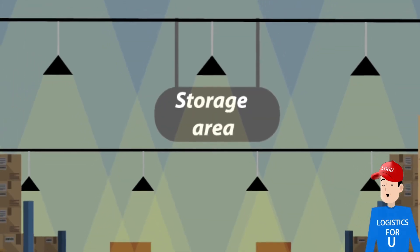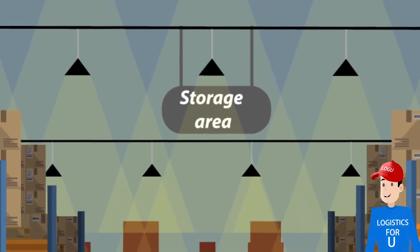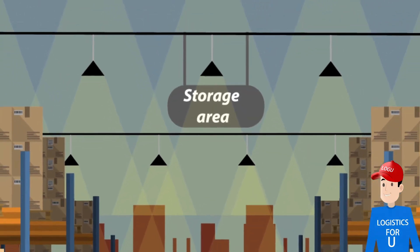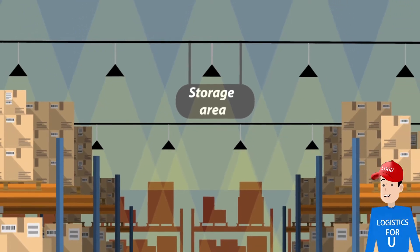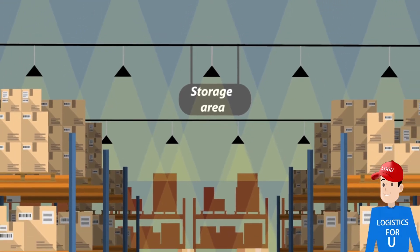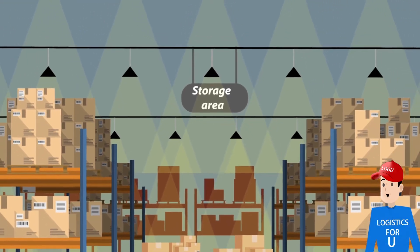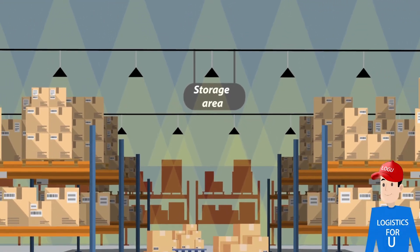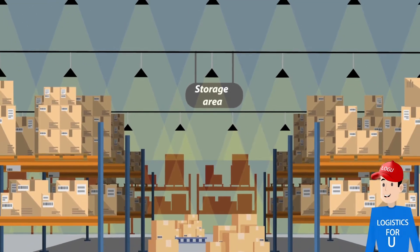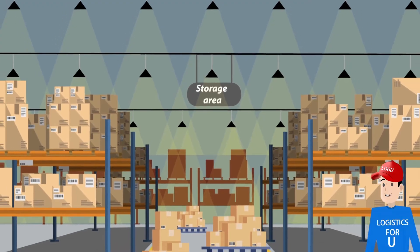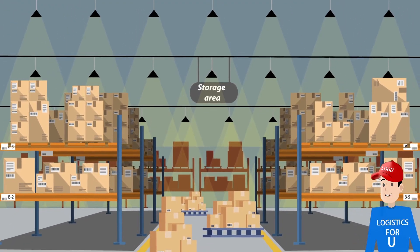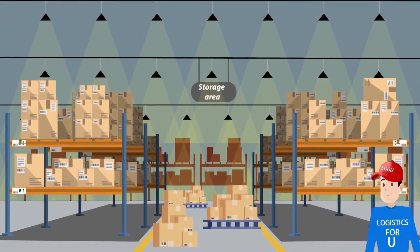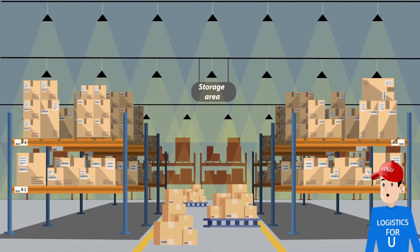This is the actual storage area for goods. The goods can be arranged on ground, on pallets, or on light duty or heavy duty racks, as per the product weight and the warehouse layout design.